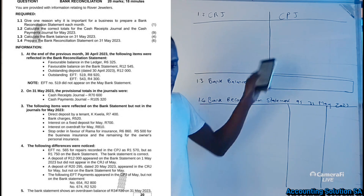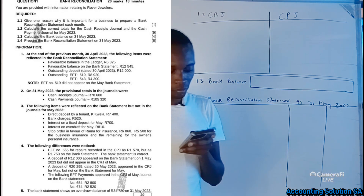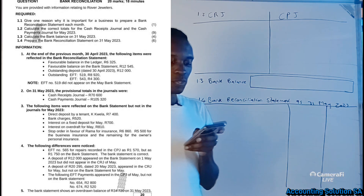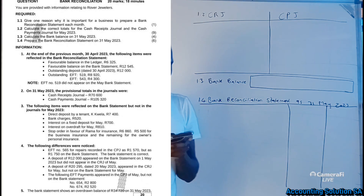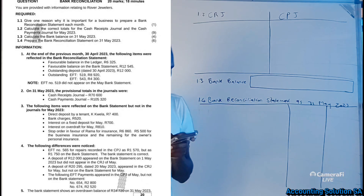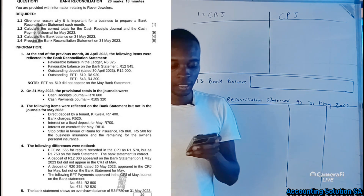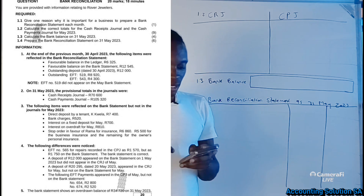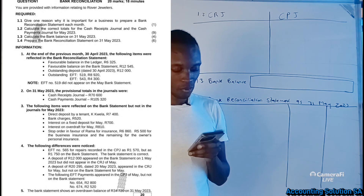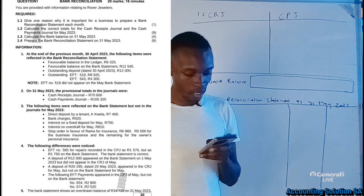The previous bank reconciliation statement had a favorable balance of R6,325 in the ledger account — which is the cash receipts and cash payment journal. It also had a favorable balance on the bank statement of R12,000, and an outstanding deposit dated 30 April of R12,000. Also, outstanding EFT number 519 and EFT number 543 — note that EFT number 519 did not appear on the May bank statement, which means we have to record it again.